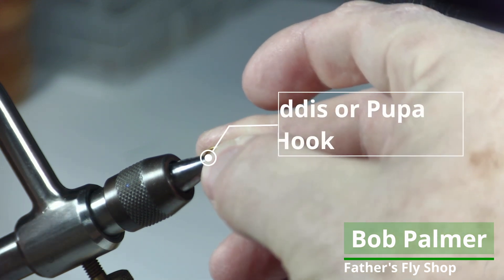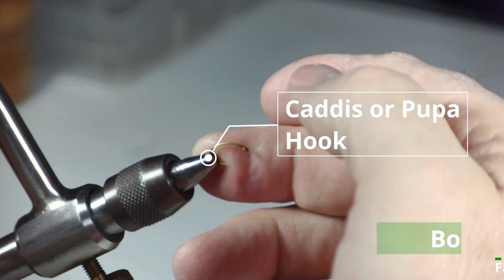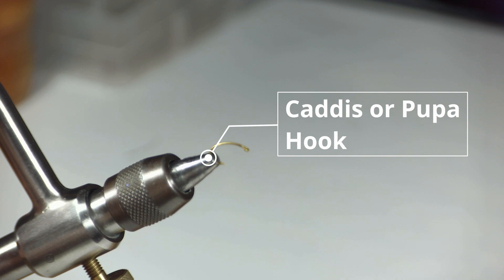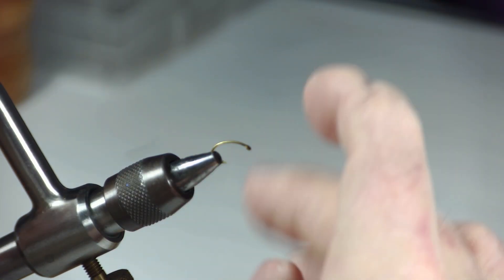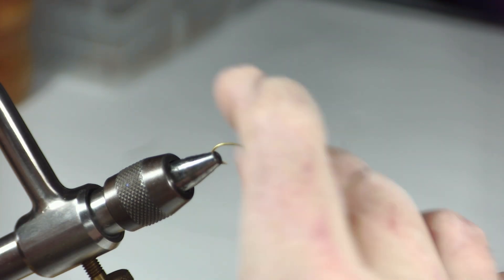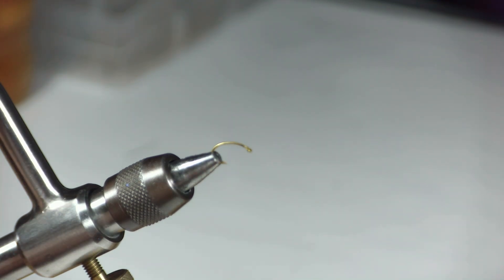We're going to stick that in the jaws of the vise. If you don't remember exactly where to clip it, you want to avoid the point and go about there. Then we'll check to make sure it's secure in the vise.